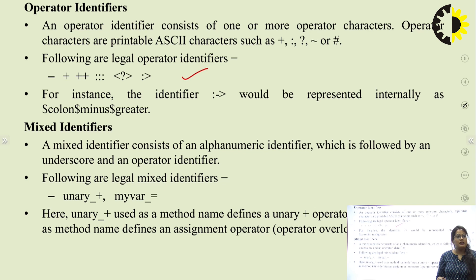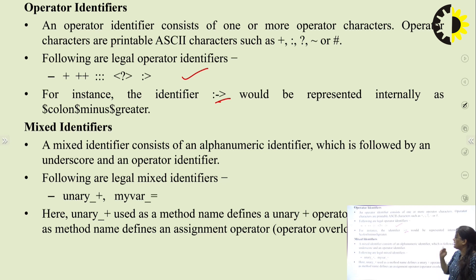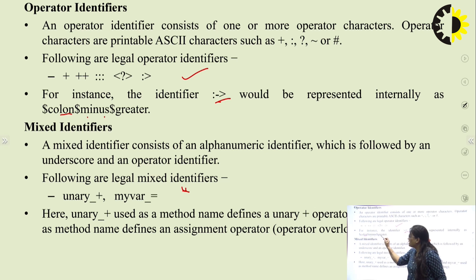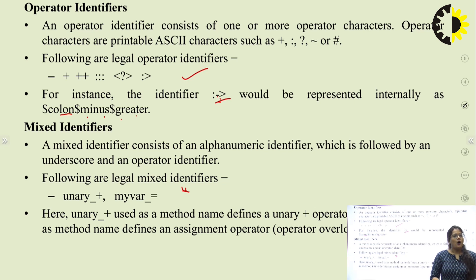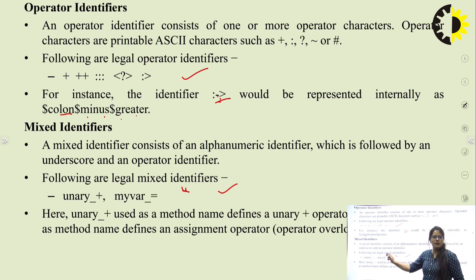For instance, the Scala compiler will represent the operator identifier ':+->' internally as '$colon$minus$greater'. The last type is mixed identifiers. A mixed identifier consists of an alphanumeric identifier followed by an underscore and an operator identifier. Examples of mixed identifiers are: unary_+, myVar_:=.